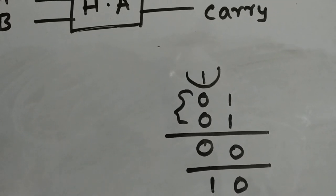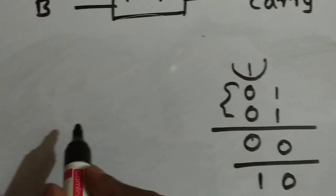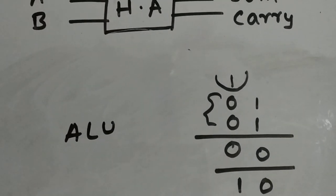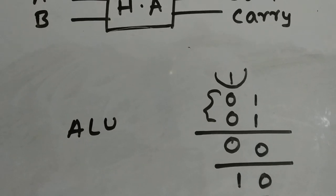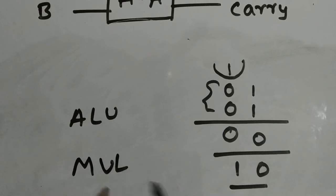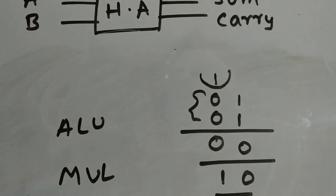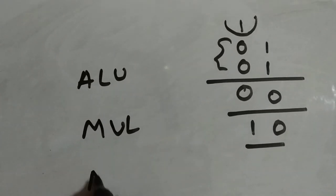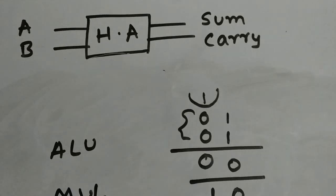So where is a half adder used? Half adders are mostly used in ALUs (Arithmetic Logic Units) and in other addition components. We can also use half adders in multipliers, though that becomes complicated, so we prefer full adders. Half adders are also used as building blocks inside full adders and other adder circuits.